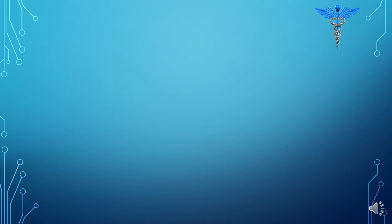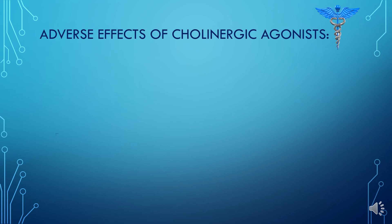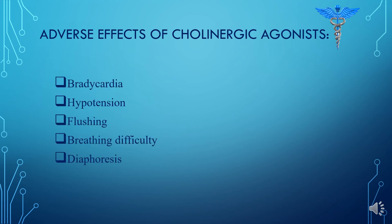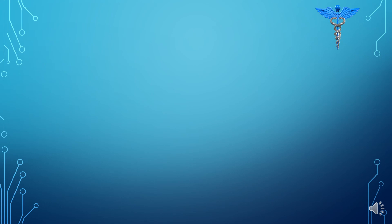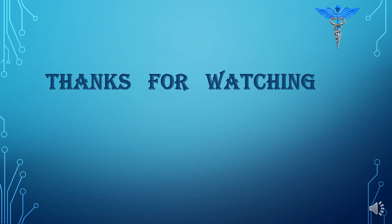Cholinergic agonists can cause several adverse effects, including bradycardia — low heart rate — hypotension, flushing or skin blushing which is a sudden reddening of the face, neck, or upper chest due to increased blood flow. They may also cause breathing difficulty or diaphoresis, which is sweating to an unusual degree as a symptom of disease or a side effect of a drug. Thanks for watching, my dear friends.